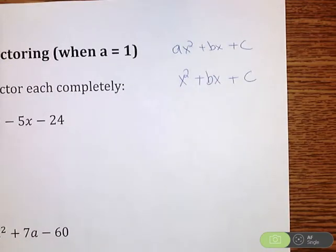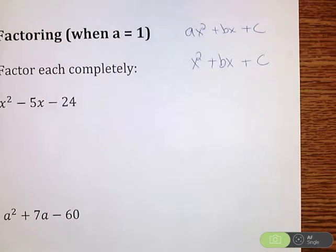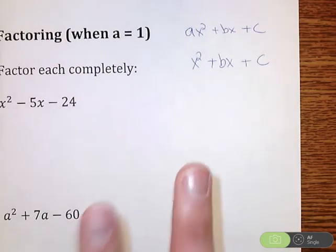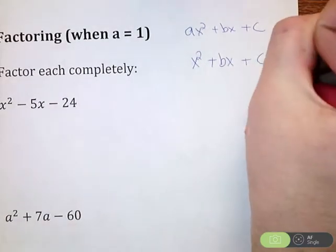Now, when we're factoring, there is some shortcuts that allow us to get these problems done nice and easy. What we're looking for is two numbers that multiply.